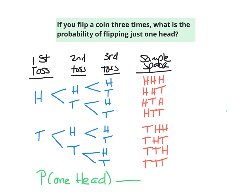Same problem: if you flip a coin three times, what is the probability of flipping just one head? Using the same tree diagram and the same sample space, I'm looking for the probability of flipping just one head, so I'm going to circle all outcomes that have exactly one head.